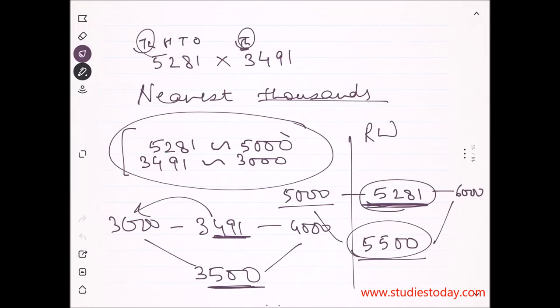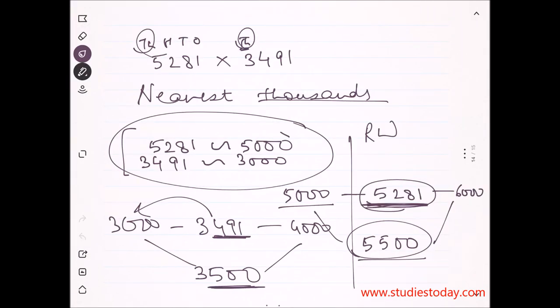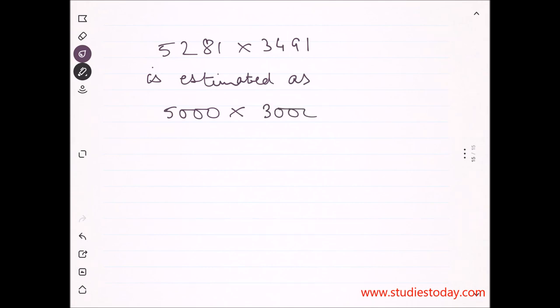So this question becomes 5,281 into 3,491, which is estimated as 5,000 into 3,000. This gives us 15 with six zeros, which is 1,50,00,000. It's a large answer - you can put it in Indian or international system. This is your final answer.